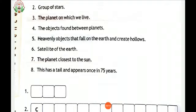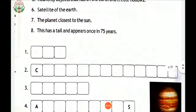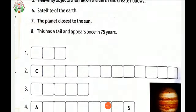Seventh, the planet closest to the sun. Mercury is the closest planet to the sun and it is also the smallest, only a little bit larger than earth's moon.